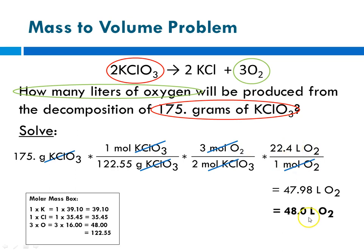And again, we ended up with 48.0 liters of oxygen. This is Ms. Augustine signing off. I will be posting more stoichiometry problems for us to practice very soon. I hope this helps. Thank you.